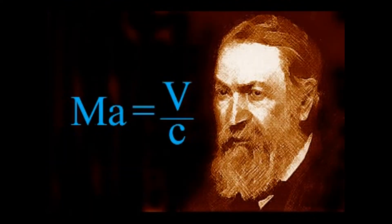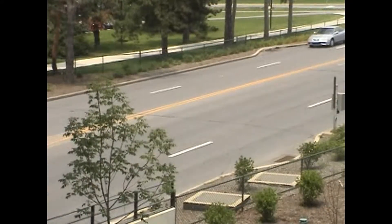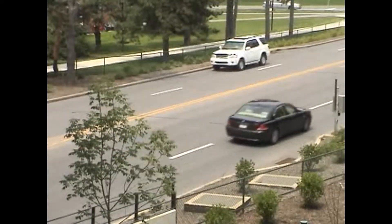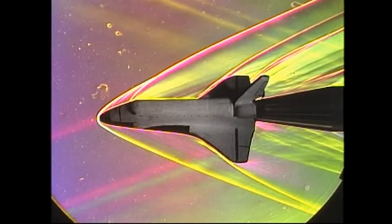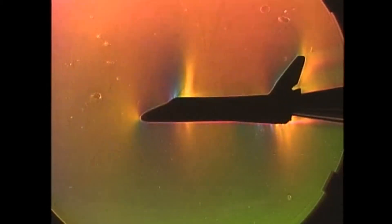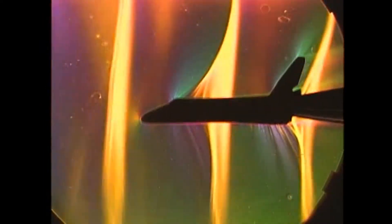Another very important non-dimensional parameter is the Mach number, named for Austrian physicist Ernst Mach. It's defined as the ratio of the speed of a flow, v, to the speed of sound, c, and it determines a flow's compressibility. For example, cars usually travel at speeds less than one-tenth the speed of sound, where we ignore any small density changes and consider the flow to be incompressible. On the other hand, some flight vehicles break the so-called sound barrier and fly at supersonic speeds, or Mach number greater than one. When the Mach number is around one, as in this transonic wind tunnel test of a space shuttle model, small speed changes make a big difference in the flow pattern.